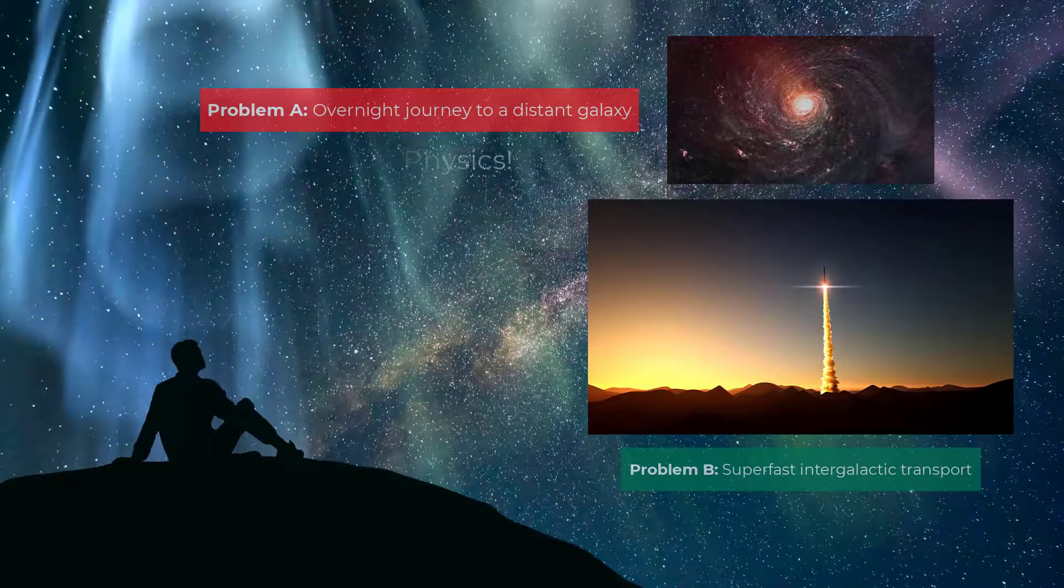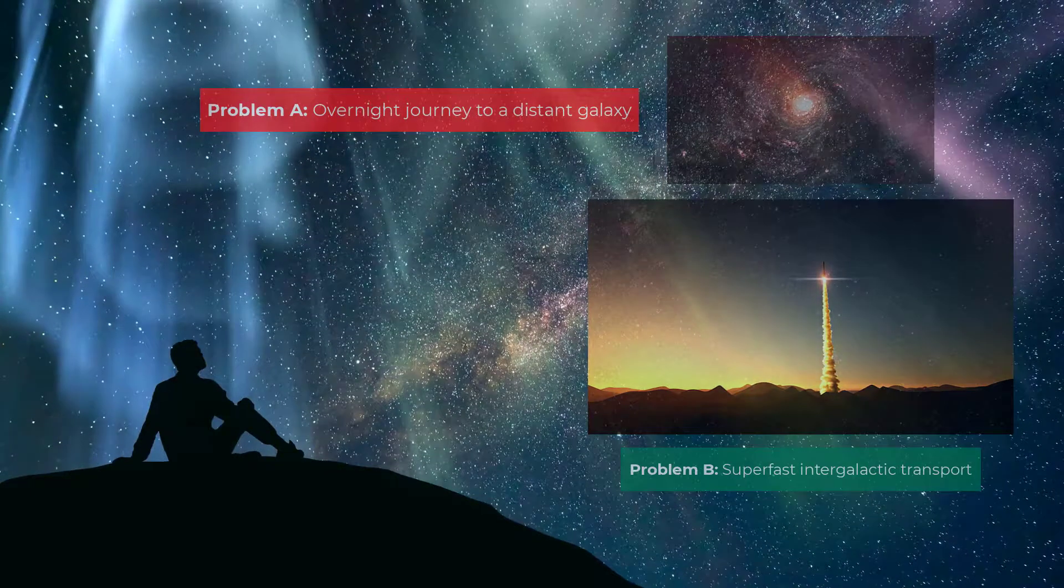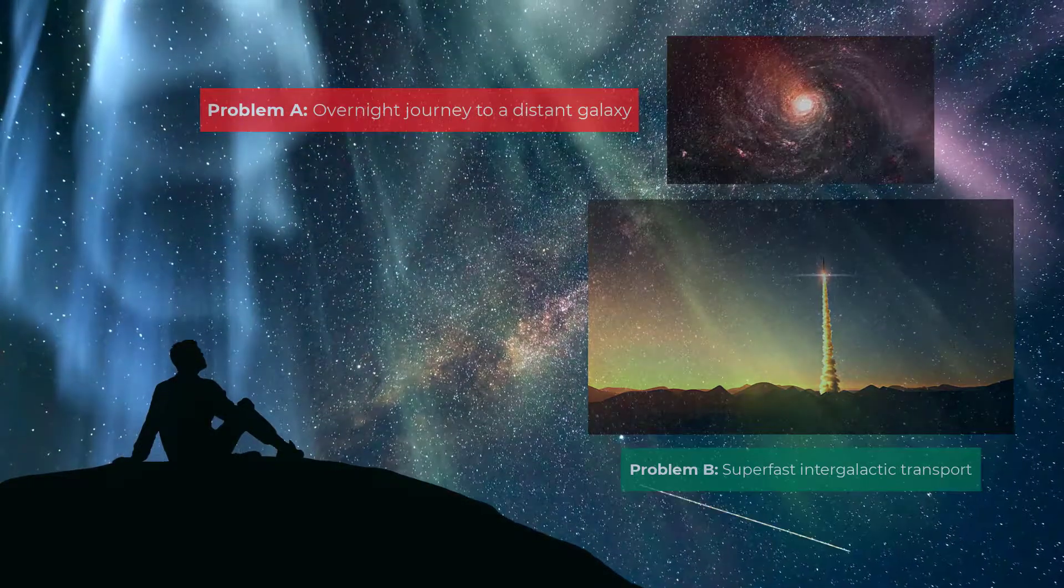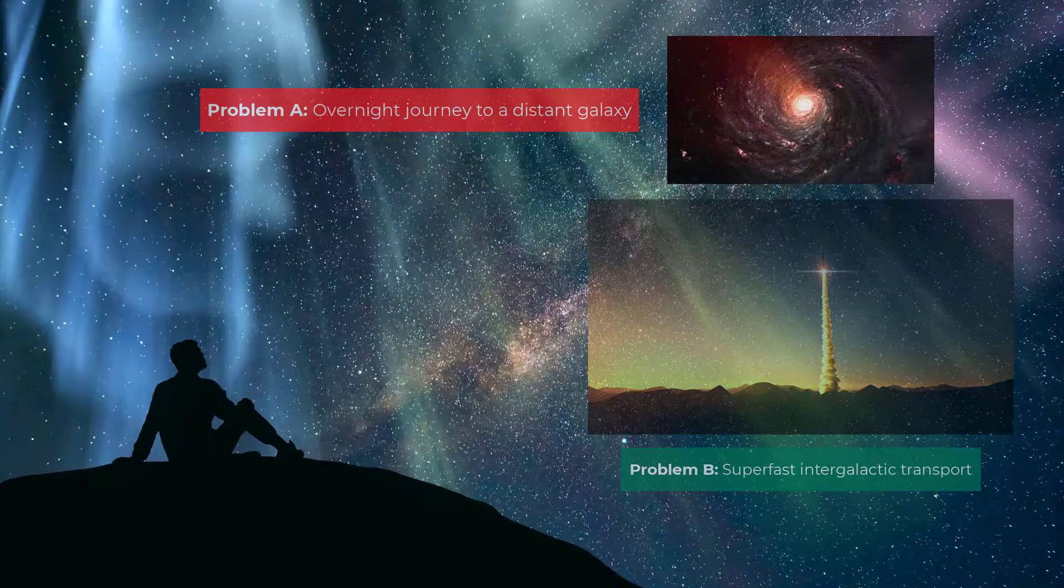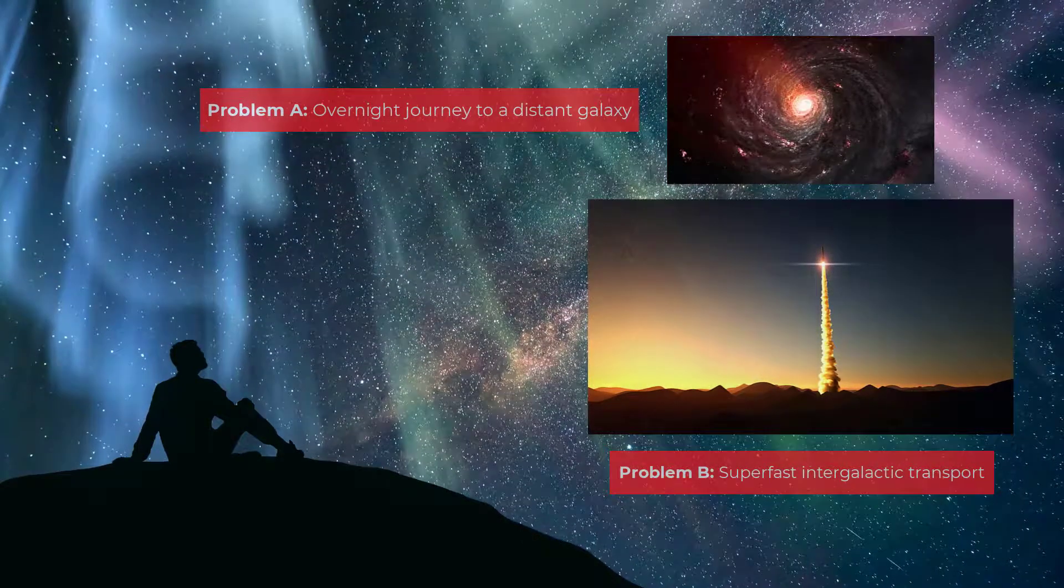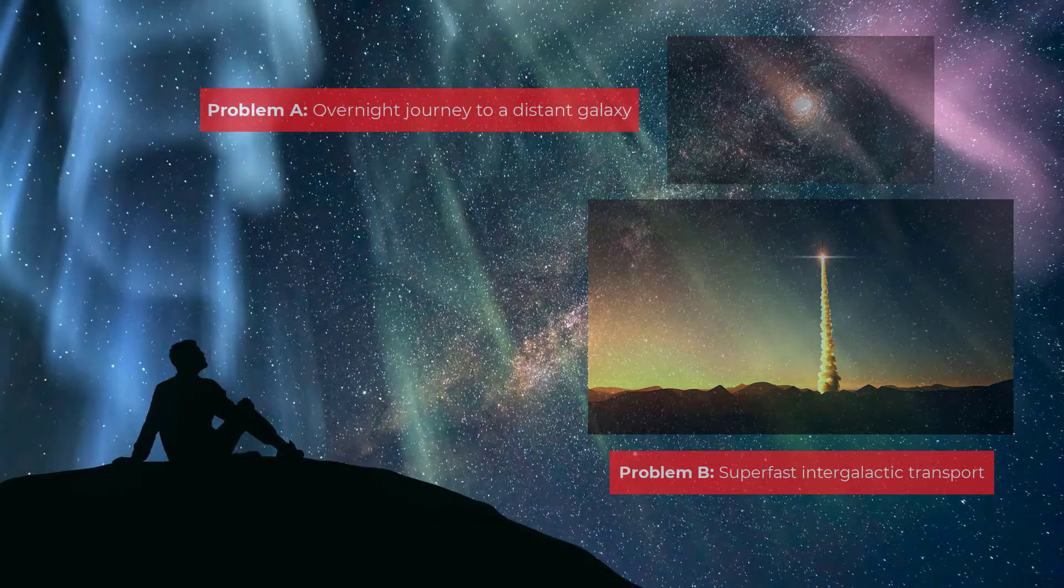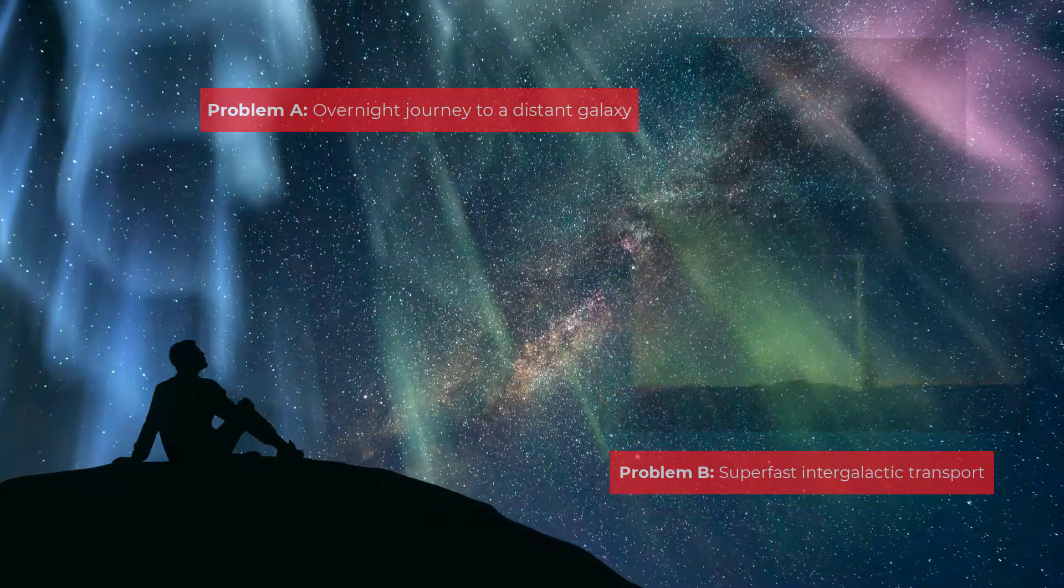But problem A reduces to B, meaning if a solution exists for problem B then a solution exists for problem A, which gives rise to a contradiction as we just proved problem A is unsolvable. Therefore problem B is unsolvable.